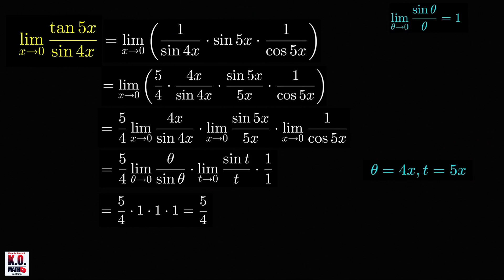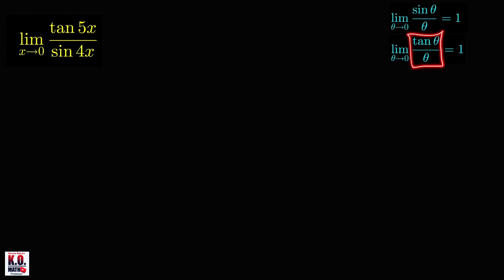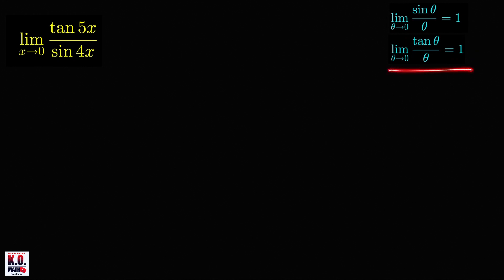Let me show you another way to evaluate this limit. Here we assume we also know that the limit of tan(θ)/θ as θ approaches 0 is equal to 1. This is not hard to show because tan(θ)/θ can be written as sin(θ)/θ times 1 over cos(θ). The first factor approaches 1 and cos(θ) also approaches 1, so the limit of this product is 1 times 1, which is 1.